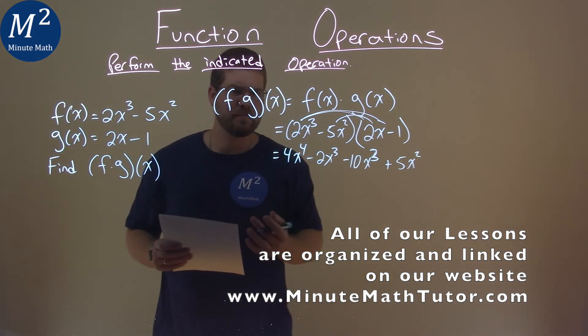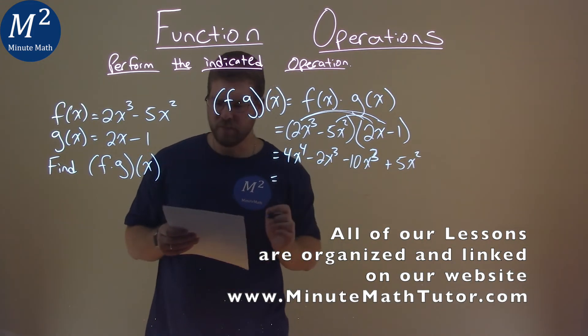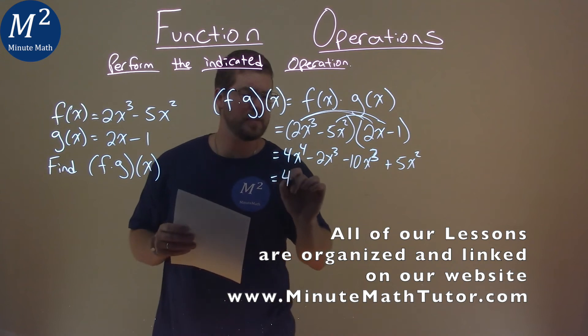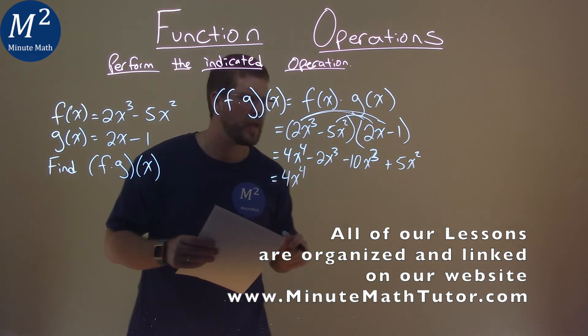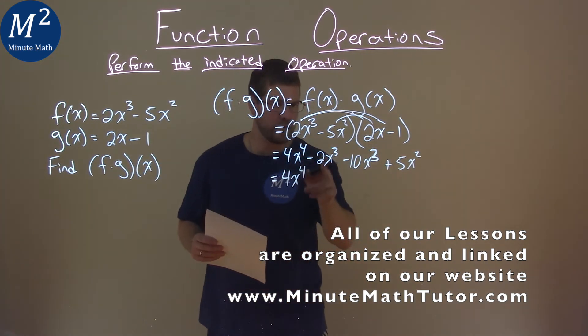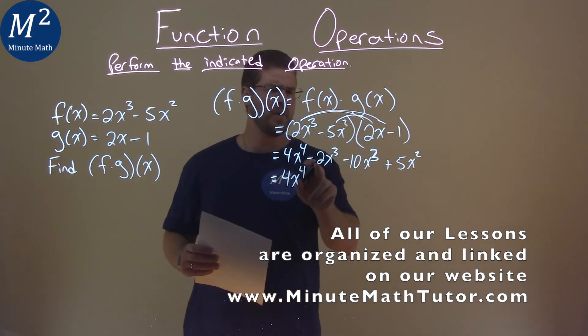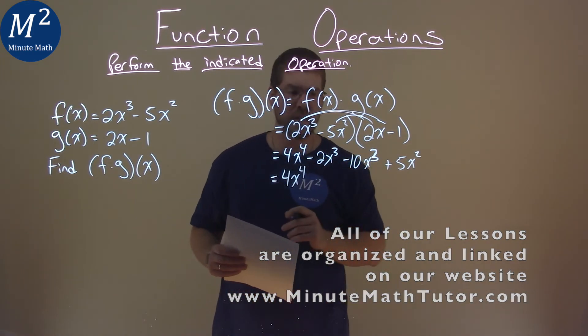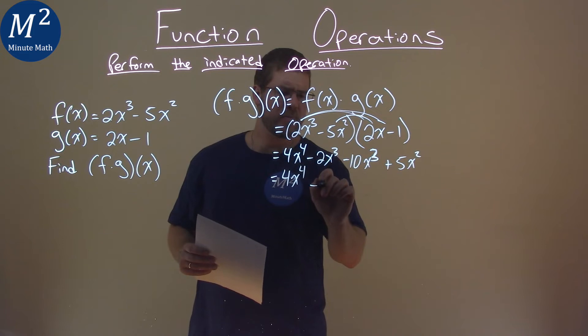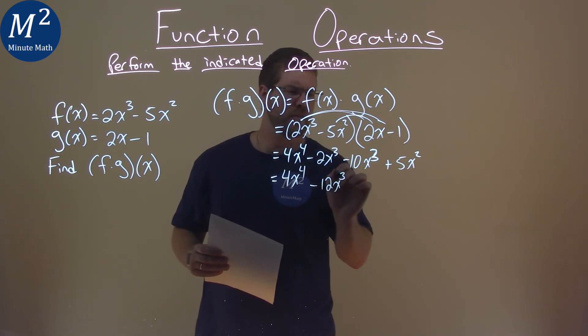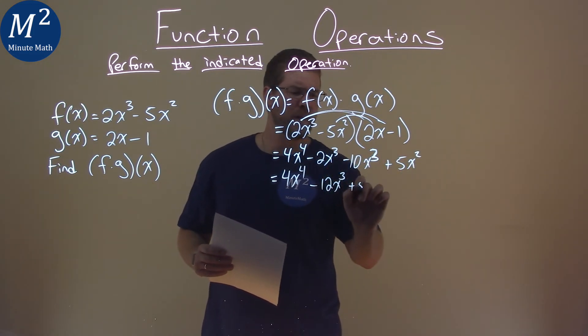Well, let's go combine our like terms here. Nothing else has the fourth power, so we leave that there, 4x to the fourth. Now, the third power, I almost forgot it, but we got it here. We have negative 2x to the third and negative 10x to the third. That comes out to be a negative 12x to the third. And then we bring down the 5x squared.